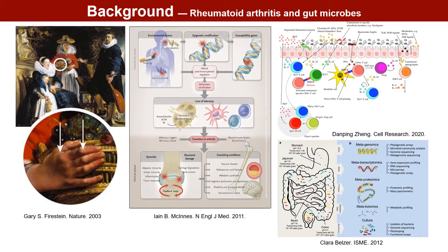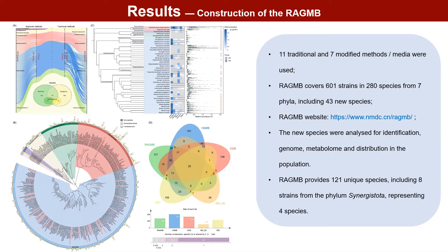Dysbiosis of the gut microbiota has been recognized as a potential underlying cause of rheumatoid arthritis. However, many studies are limited by the lack of culturable strains. To achieve this goal,